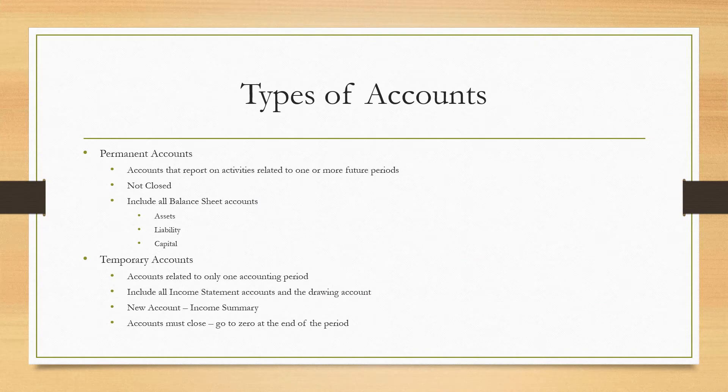Now there are different types of accounts we have to look at when we look at things like closing entries. We have permanent accounts and we have temporary accounts. With permanent accounts, these are accounts that report on activities related to one or more future periods. They do not close, and they do include all of our balance sheet accounts — our assets, our liabilities, and our capital.